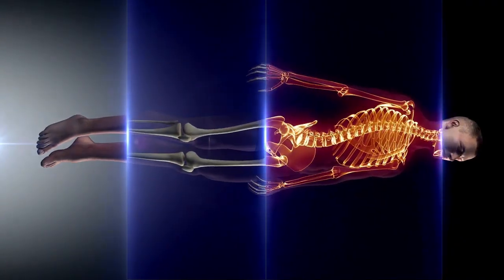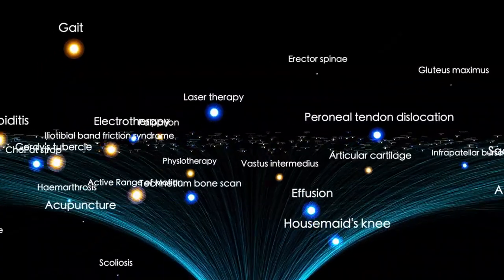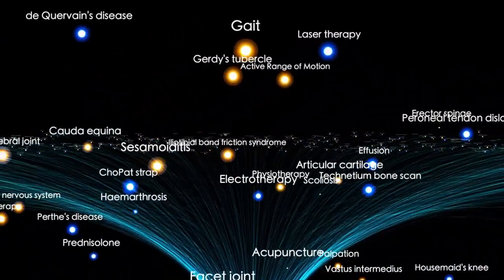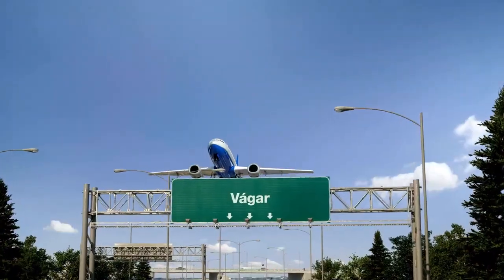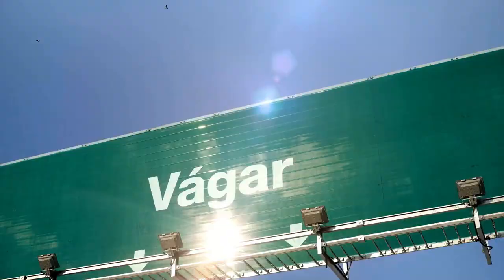Recognizing the rare opportunity, NASA fast-tracked development of the Voyager program. Two identical spacecraft, Voyager 1 and Voyager 2, were constructed to take advantage of the alignment. They were launched just 15 days apart—Voyager 2 on August 20th, 1977, and Voyager 1 on September 5th, 1977.